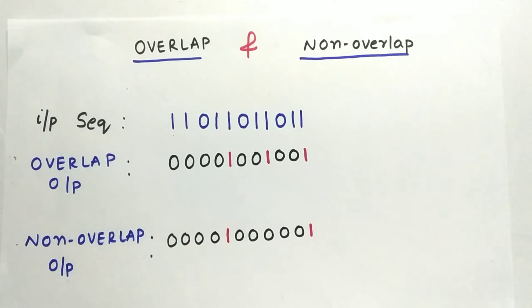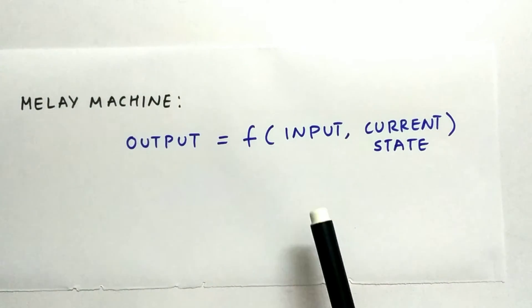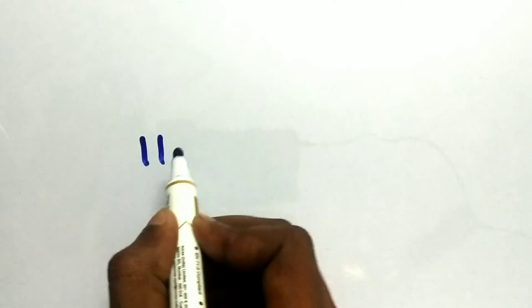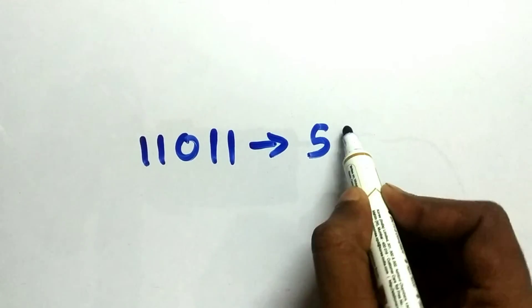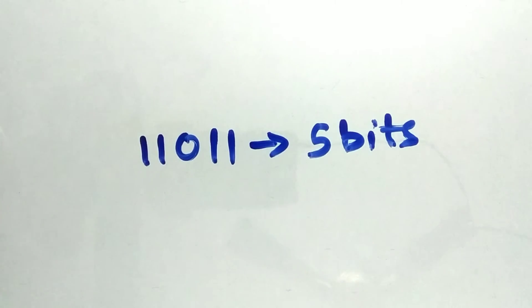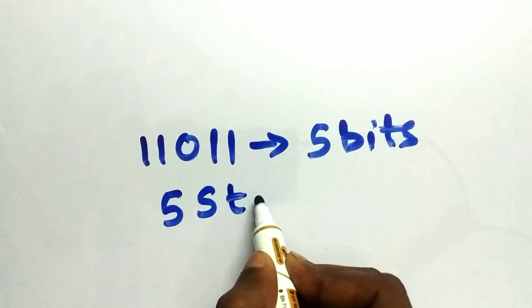Now let us go for the Mealy machine. Mealy machine is a state machine where the output is a function of input as well as the current state. To detect the sequence 11011 we have five bits, so for five bits we require five states. In Mealy machine we require five states.